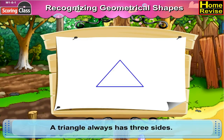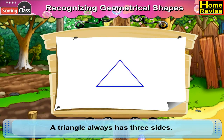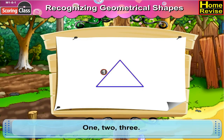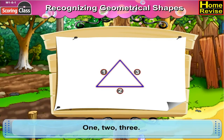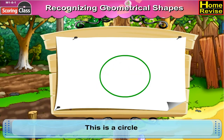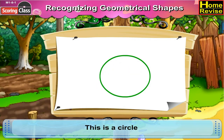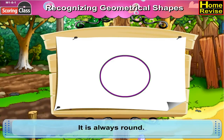A triangle always has three sides: one, two, three. Now the next shape. This is a circle. It is always round.